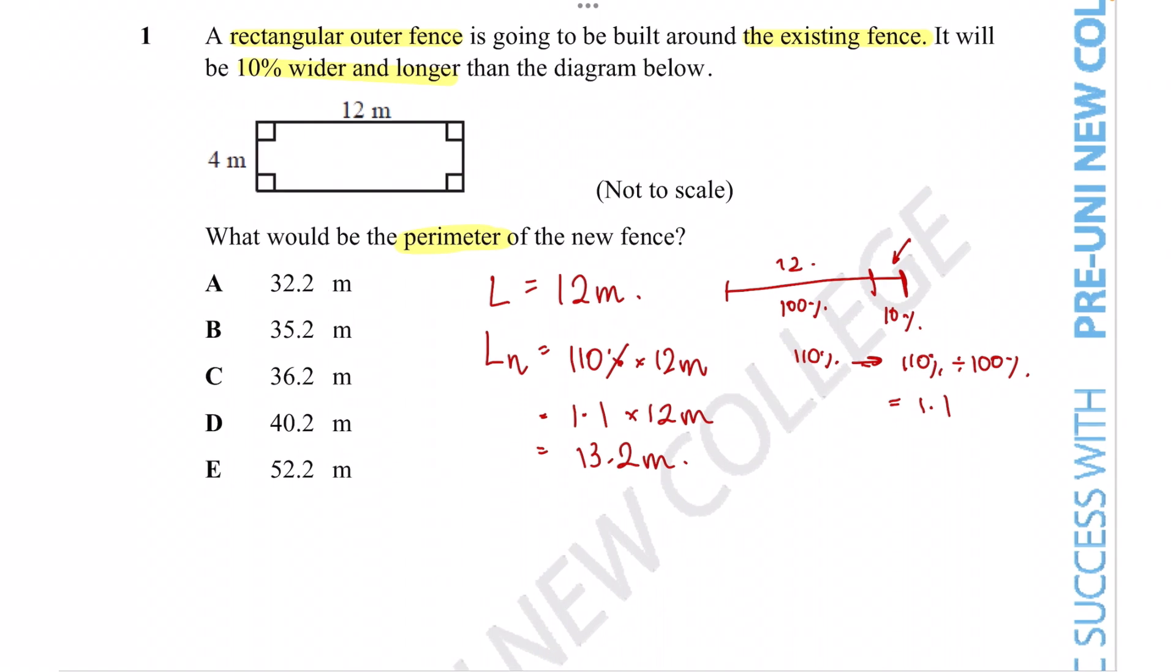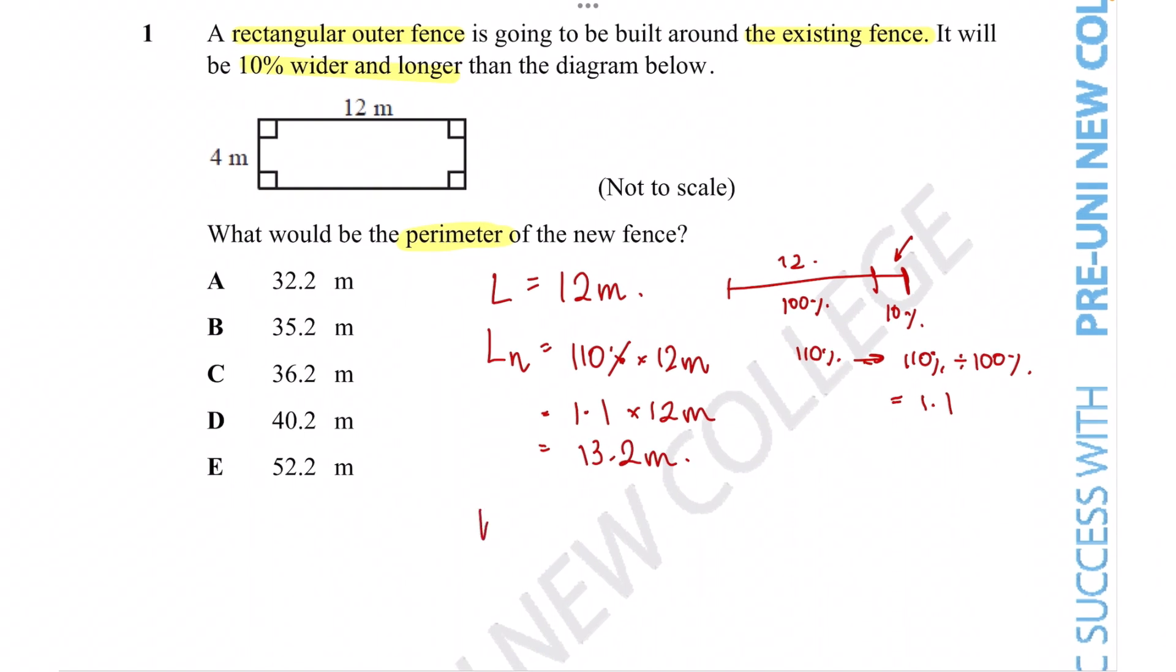Let's apply that technique to the width as well. We're given the original width as 4 meters, and it's going to be wider by the exact same percentage.